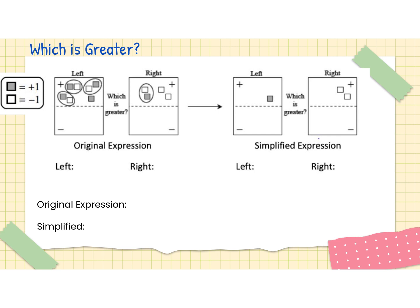Here's our first problem. The first thing you need to do is figure out what is the original expression on each of the mats and then what is the simplified expression. On the left mat, the original expression has four positive tiles, so we have four minus three. On the right side, we have one minus three. We want to simplify our mats to determine which one is greater. We can see some zero pairs, so those are going to be removed on each mat individually. I'll make myself a key that says zero pairs.